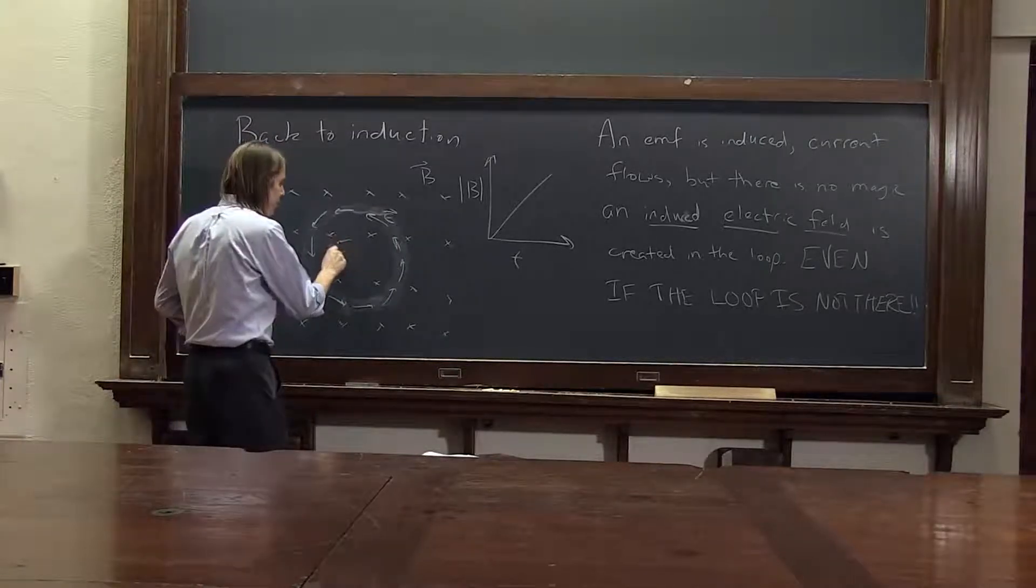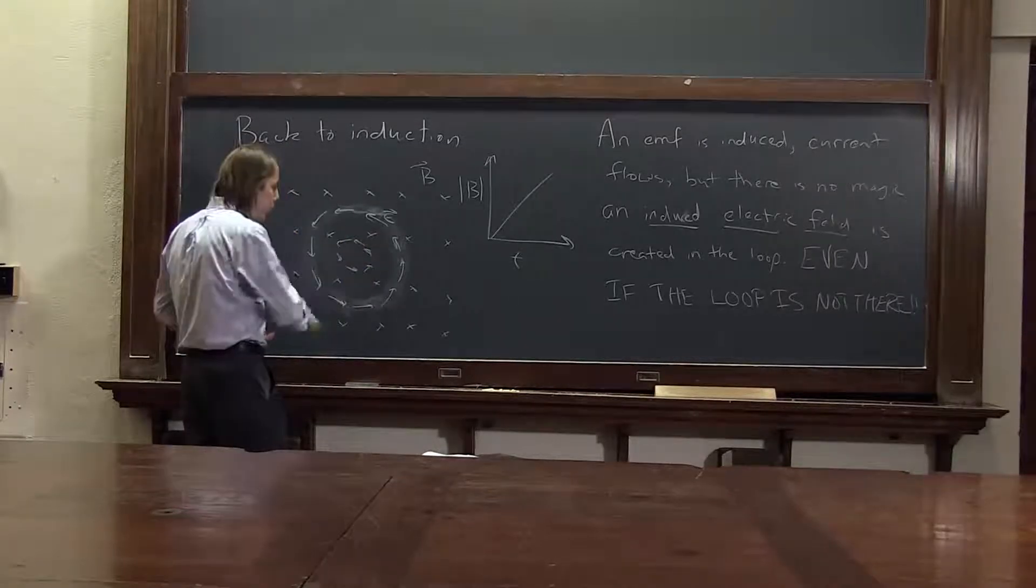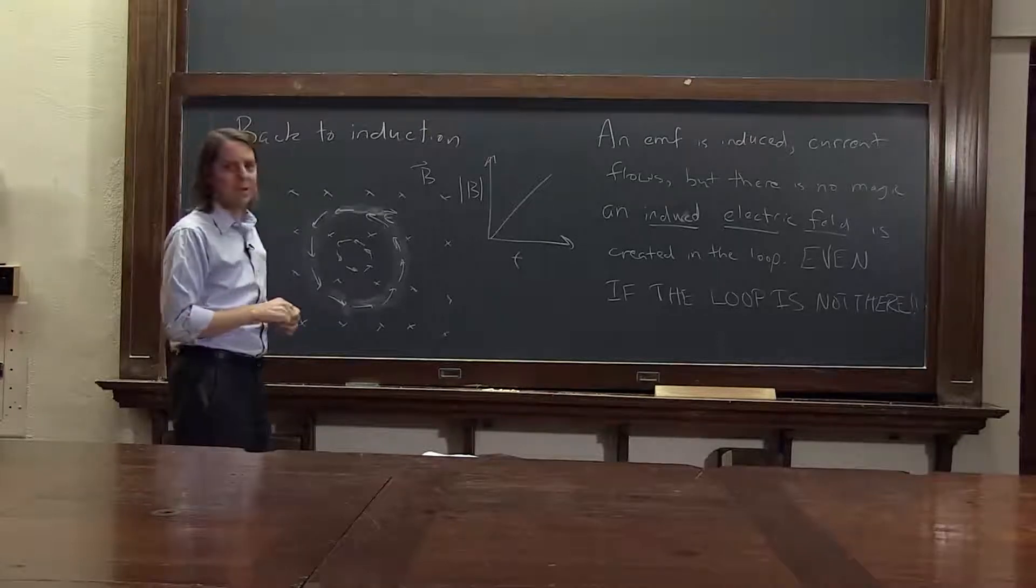You might say, what about this smaller loop? Well, there's a real electric field in this smaller loop as well. You'll get a real electric field swirling around when you have a changing magnetic field.